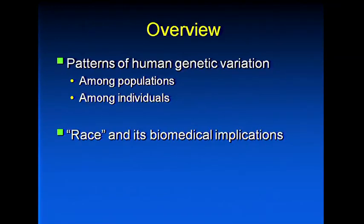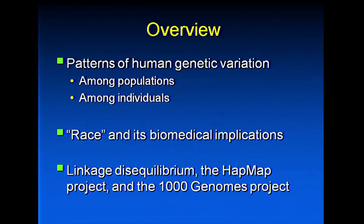What I will talk with you about this morning: we'll start with a discussion of patterns of human genetic variation, both among populations and among individuals. We'll talk about some applications of those studies. One is to illuminate our understanding of a very controversial topic — that of race — and what the biomedical implications are. Finally, we'll talk toward the end about linkage disequilibrium, the HapMap project, and the 1000 Genomes project, and how new sequence data illuminate our understanding of human genetic variation and biomedical applications.